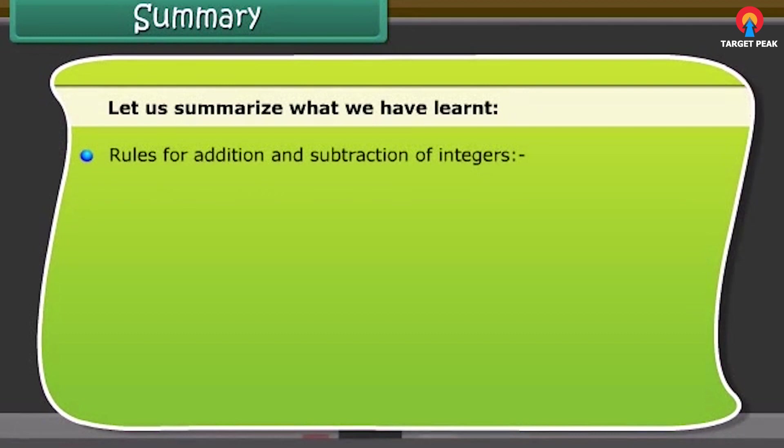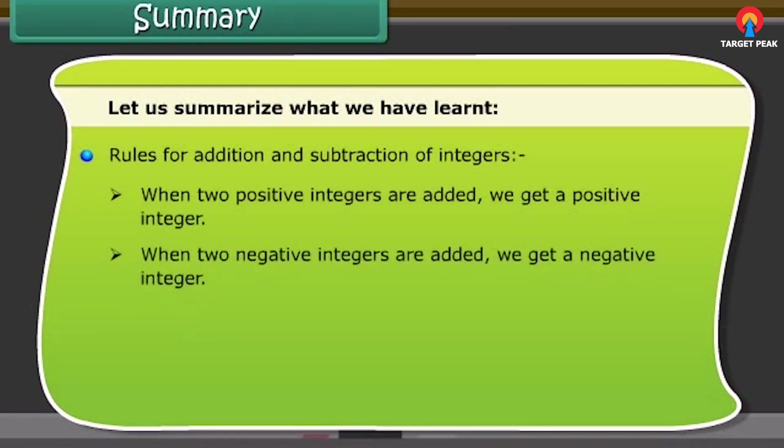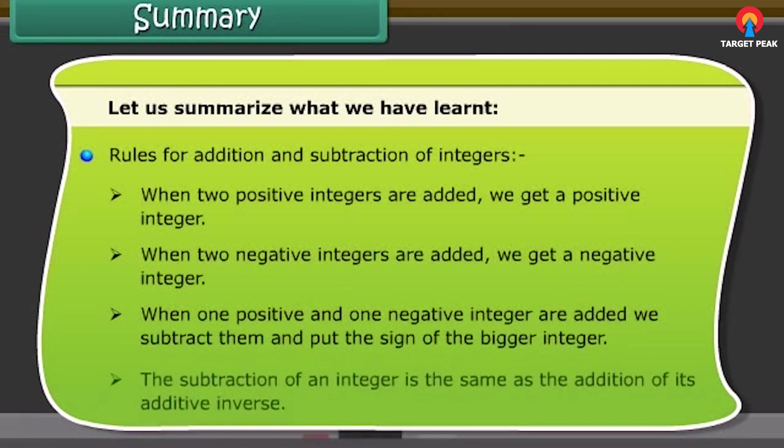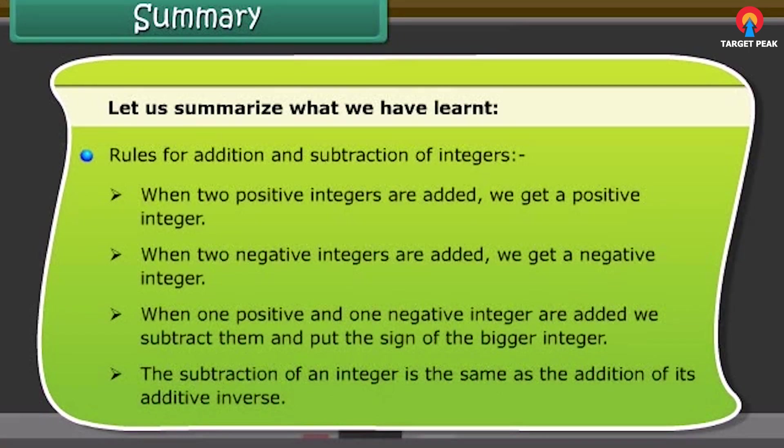Rules for addition and subtraction of integers. One: When two positive integers are added, we get a positive integer. When two negative integers are added, we get a negative integer. We subtract them and put the sign of the bigger integer. The subtraction of an integer is the same as the addition of its additive inverse.